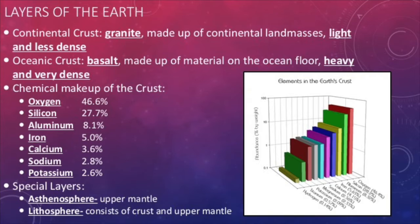There are differences in the density of the two major types of crust. Continental crust is mostly granite, which is light, and oceanic crust is mostly basalt, which is much denser. The overall composition of the crust from the greatest percentage to the lowest is oxygen, silicon, aluminum, iron, calcium, sodium, and potassium. As a result, most rocks found on the planet are made up of these.